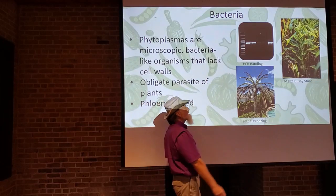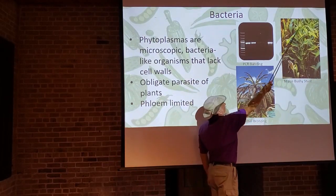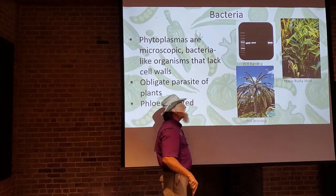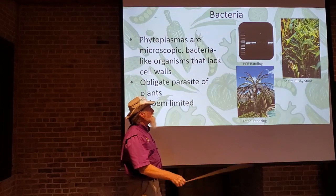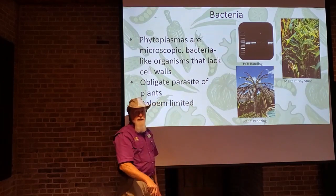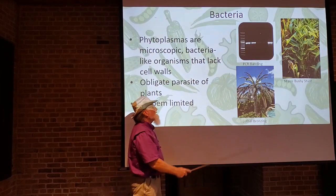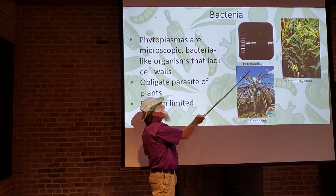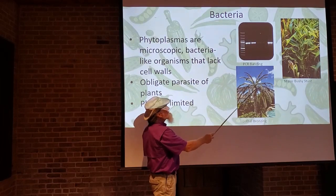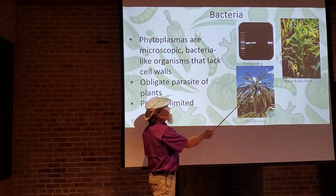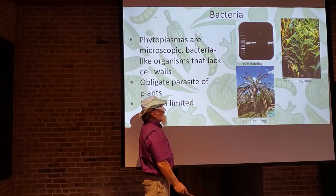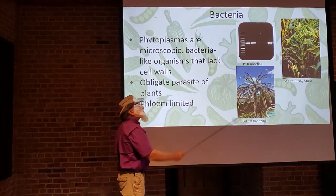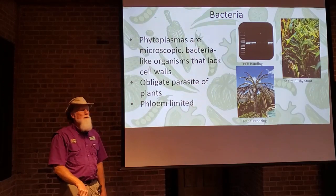Here are a couple of diseases caused by phytoplasmas. Maize bushy stunt — you can see the corn plants are much shorter, the leaves are streaked with yellow, not going to produce anything, caused by a phytoplasma. Lethal bronzing — formerly called Texas Phoenix palm decline — is very devastating in our area. On this date palm, the outer fronds are dying and turning brown, the spear will eventually die, all caused by a phytoplasma. A mature palm tree can get infected and within one year that phytoplasma will kill the palm.